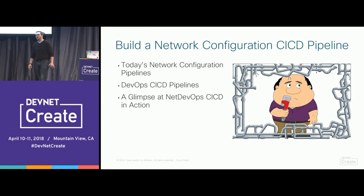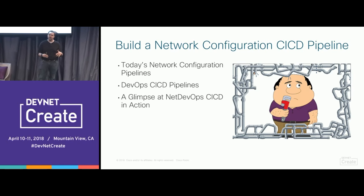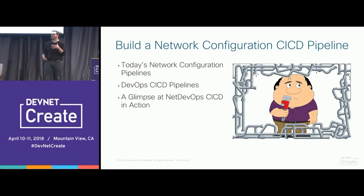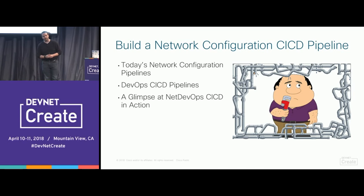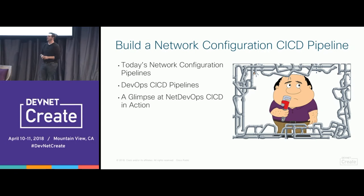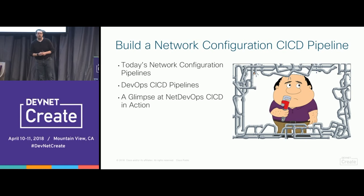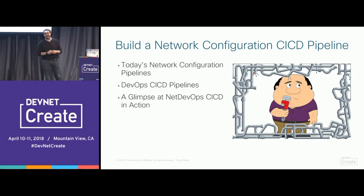We're going to start out with a look at today's network configuration pipelines, because before we can see where we want to get to, we need to talk about where we're coming from. Then we'll talk about what a DevOps CI/CD pipeline looks like from a software developer's perspective and figure out how we can map that into a network engineering area. Finally, we'll see this in action — how we can manage network configuration across the production network using network as code and configuration management strategies in a CI/CD fashion.